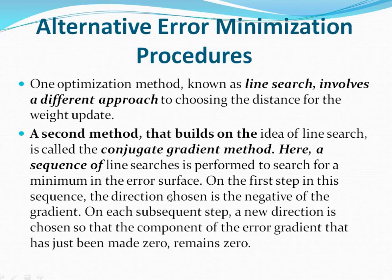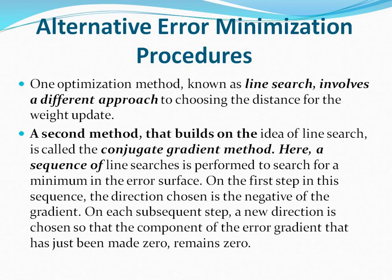In the conjugate gradient method, the first step is to choose the direction which is negative to the gradient. In subsequent steps, the direction is changed, or a new direction is taken, to minimize the error. The second method builds upon the first method. These are the alternative error minimization procedures.